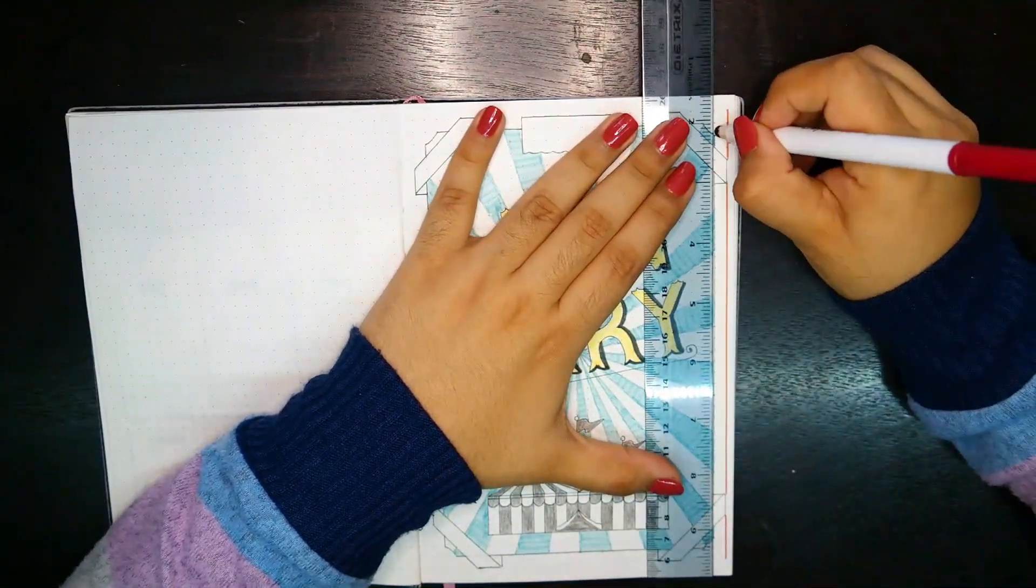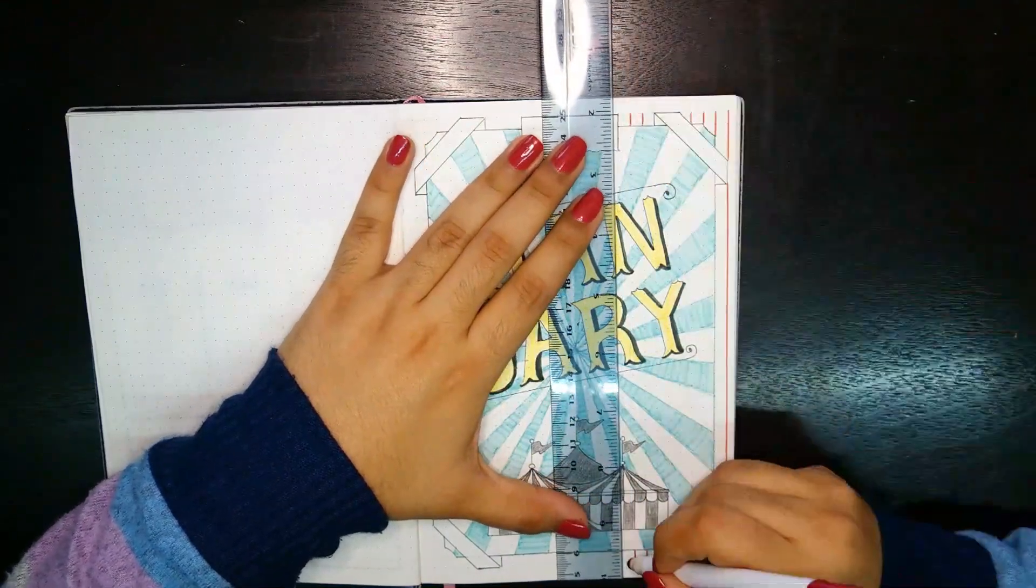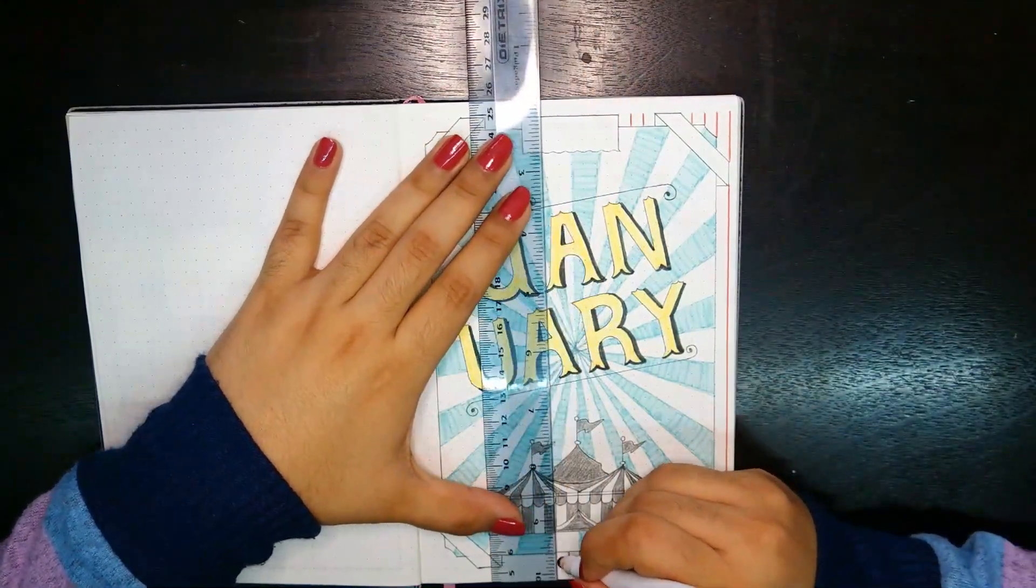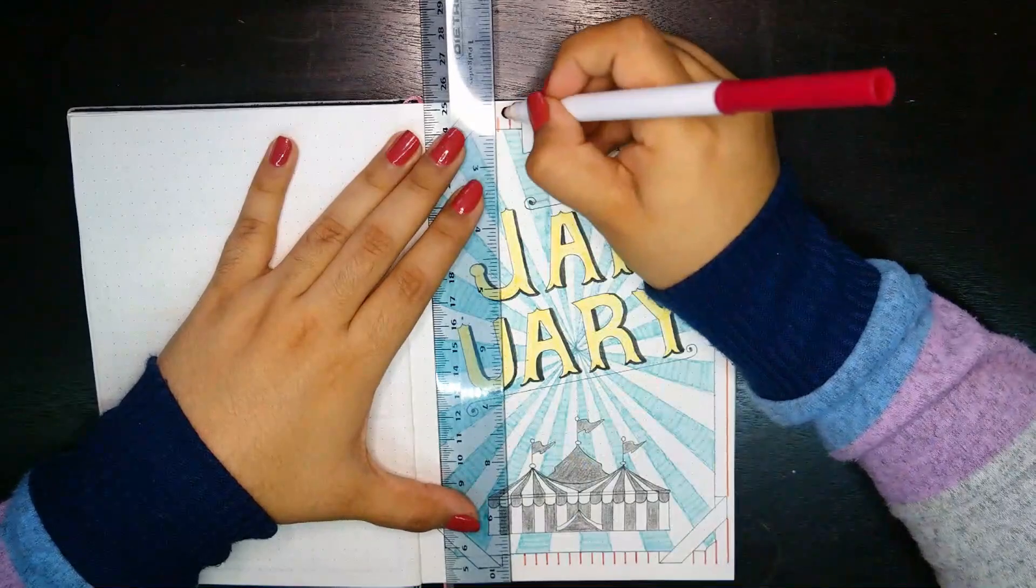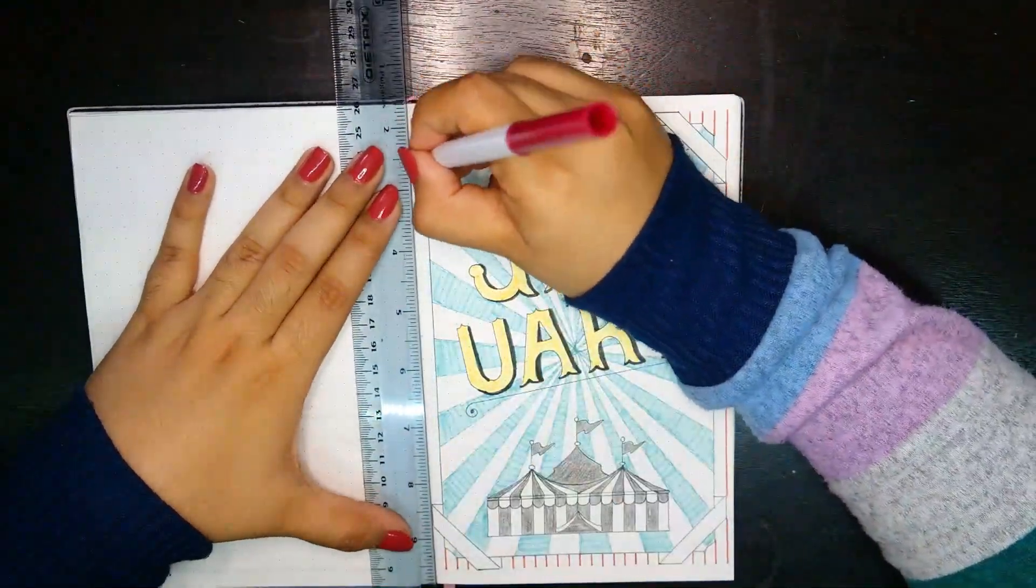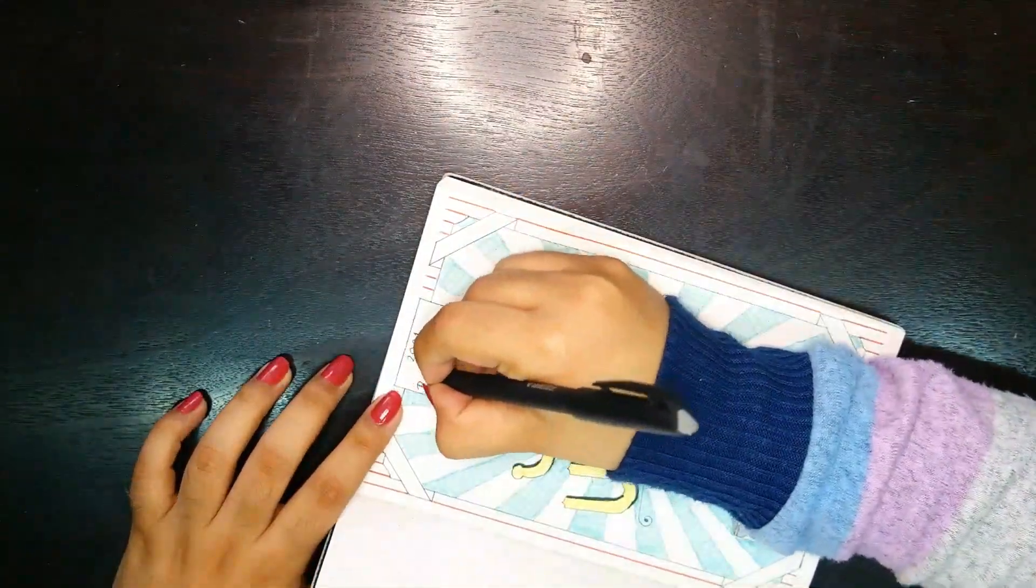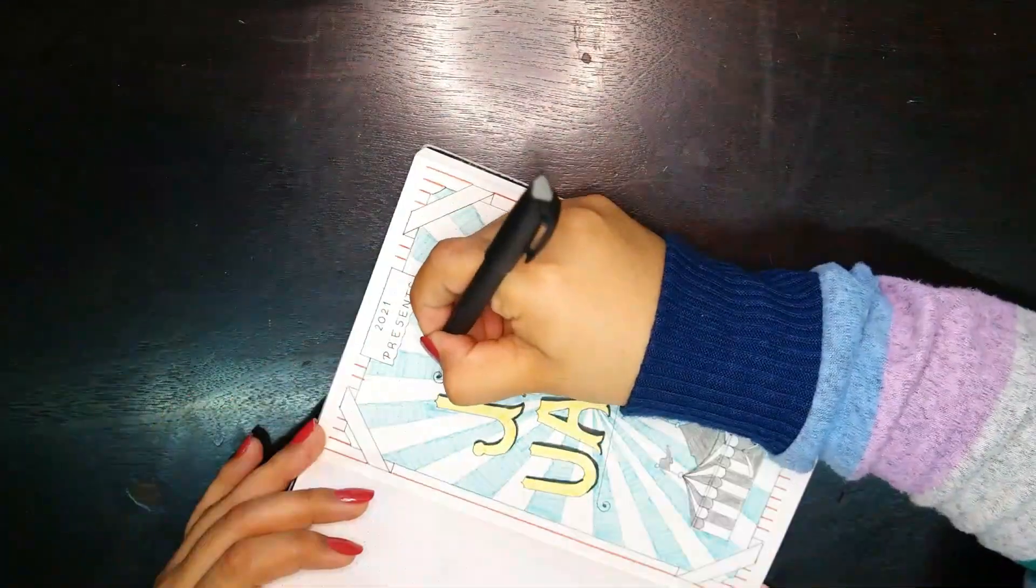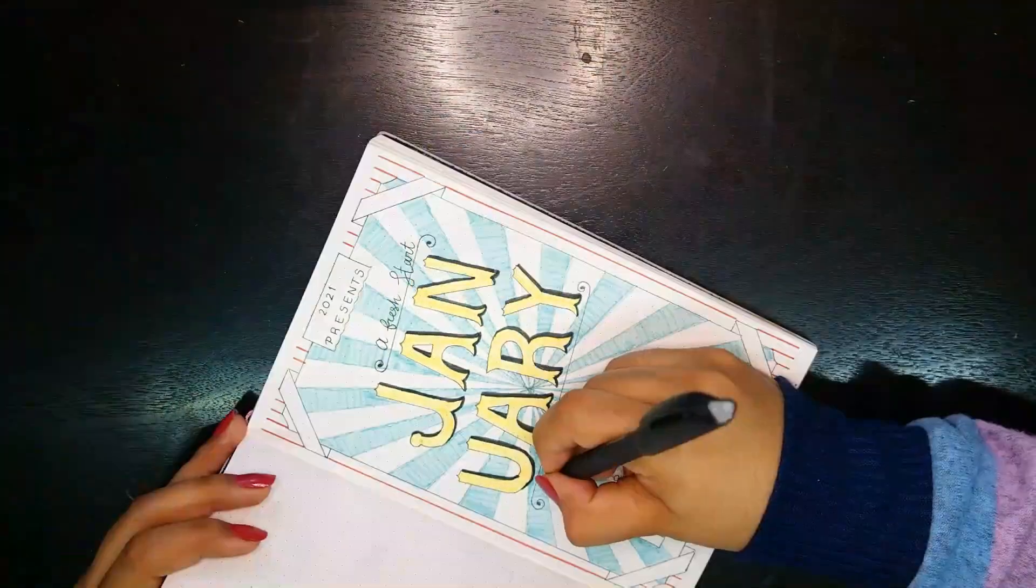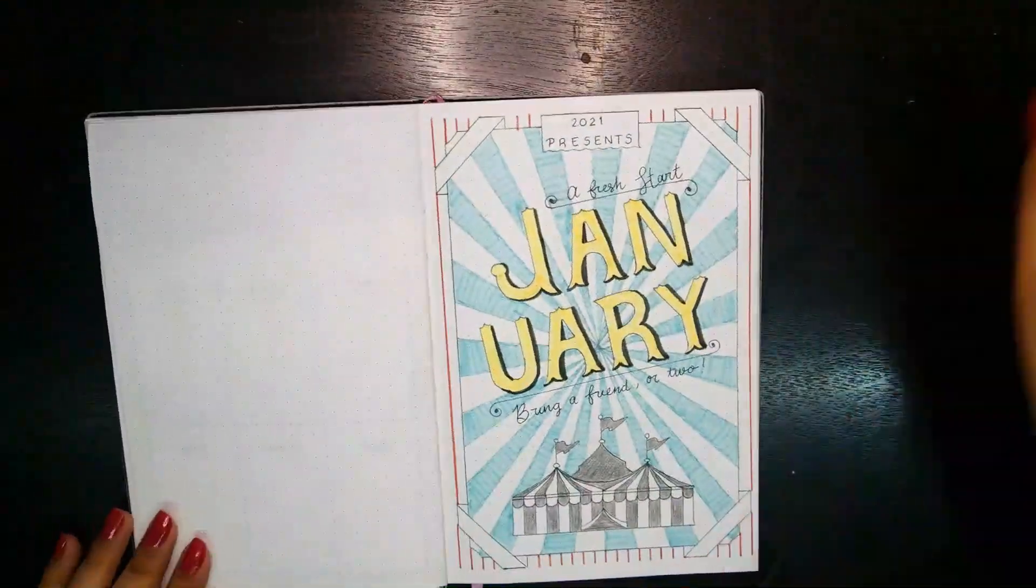After that, I used a red Crayola Supertip to add yet another background to the poster by making vertical bands across the spread on the outside edges. Inside a simple banner at the top, I wrote down '2021 presents' and I thought that was a cute detail.